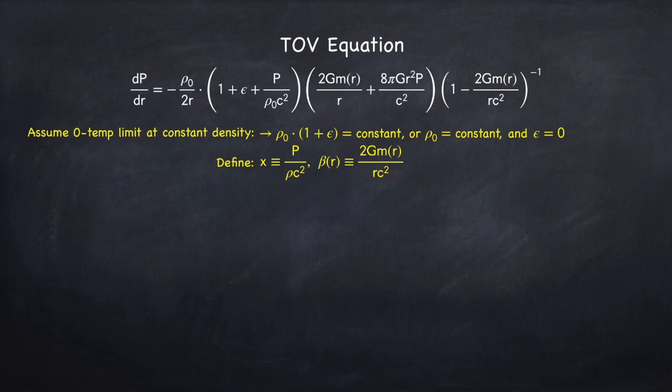I'm also going to define two quantities. The first one's going to be x, which is going to be the pressure divided by the energy density, and here energy density, rho, can either mean this interpretation or rho-naught by itself. What's important is that it's constant.